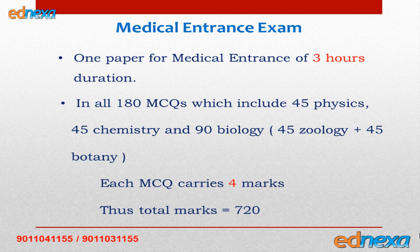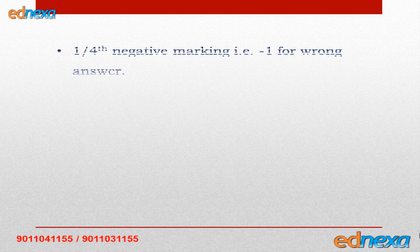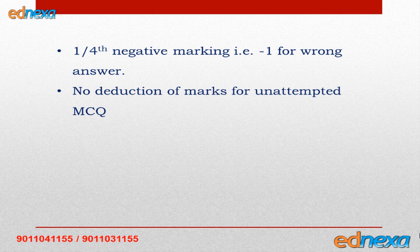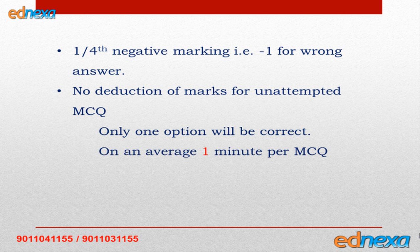For medical entrance there will be only one paper and the duration will be three hours. There will be 45 MCQs on physics, 45 MCQs on chemistry, and 90 MCQs on biology — out of which 45 will be on zoology and 45 on botany. In all 180 MCQs, each carrying four marks, so the total will be 720. There is negative marking: if one MCQ is wrong you get minus one, but if you haven't attempted it you will not lose a mark. Only one option will be correct.